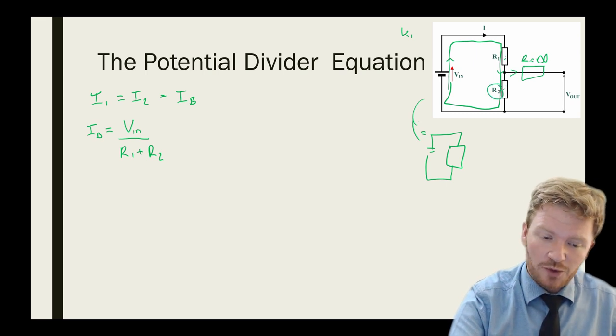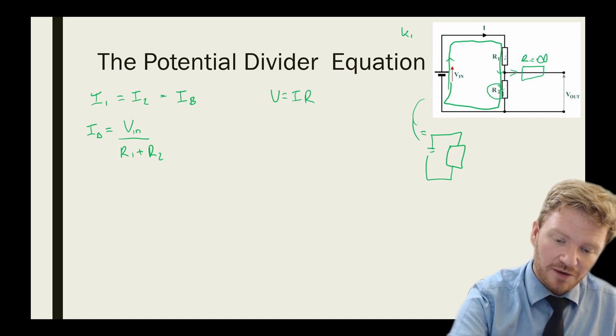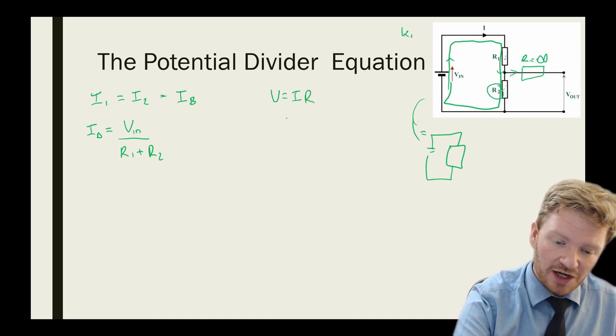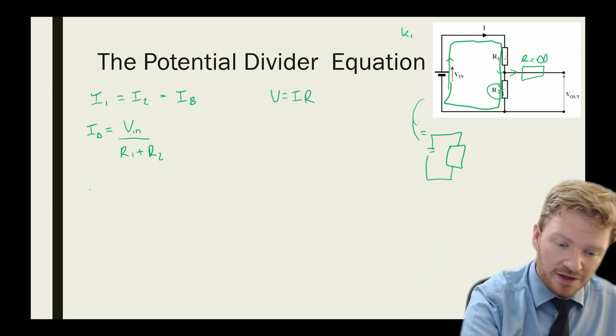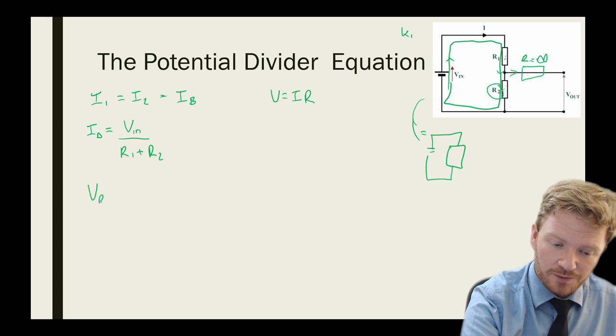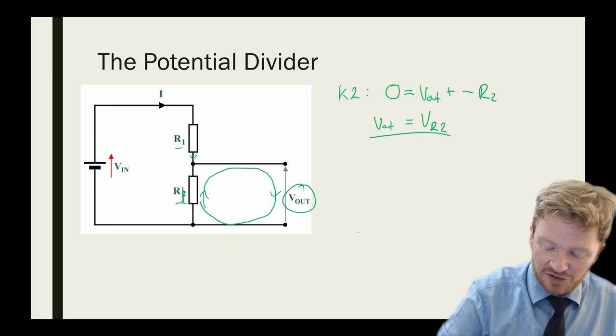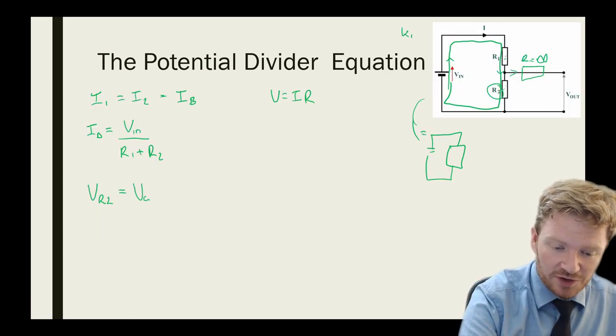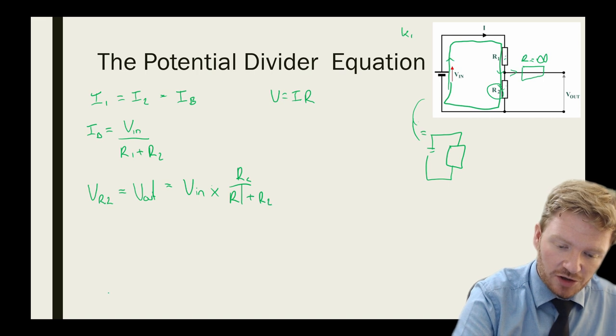How does that help us? Well, if I know what R2 is, then I can use the equation V equals I times R. I now know what I is, because I've just found it here, and I already had R. So I can say that the voltage across R2, which remember from my previous slide, V out is the same as R2, and that is equal to V in multiplied by R2 over R1 plus R2.